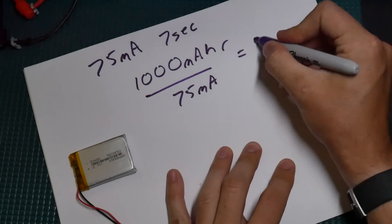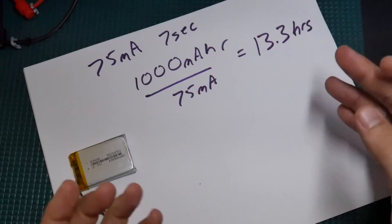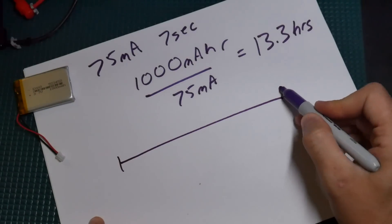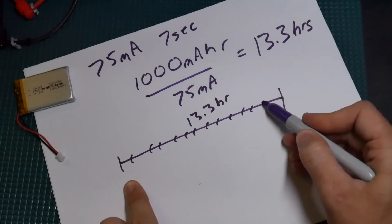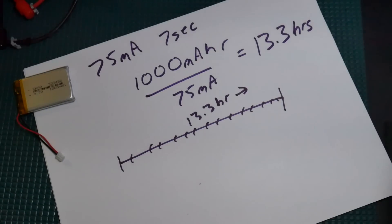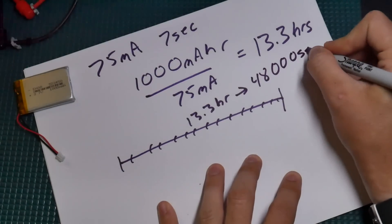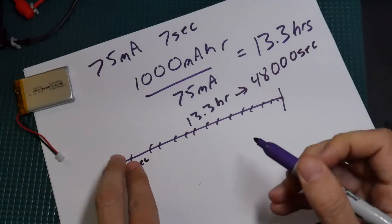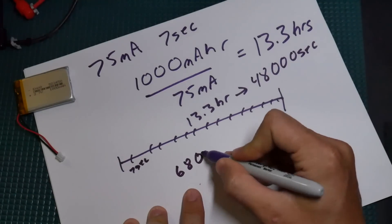You just take the 1000 milliamp hour divided by 75 milliamps and that's 13.3 hours it'll run that for. But we're not running it continuously, we're running it for only 7 seconds every time it wakes up. So over time you have 13.3 hours - how many 7 second wakes can you fit within that? Let's convert 13.3 hours to seconds: 13.3 times 60 times 60 equals about 48,000 seconds. Each wake time is 7 seconds, so take 48,000 divided by 7 and that's like 6,800 wakes.